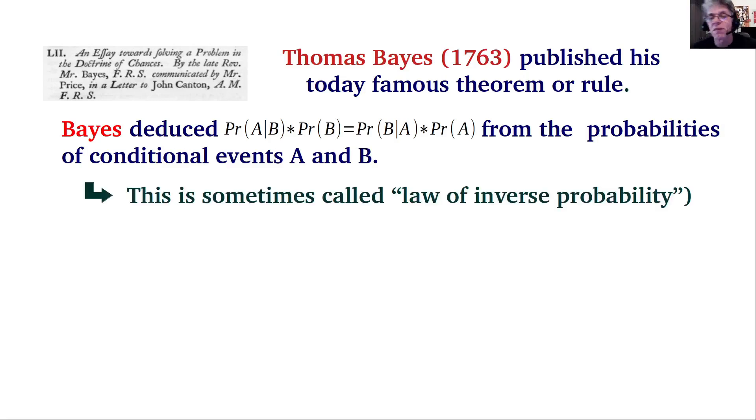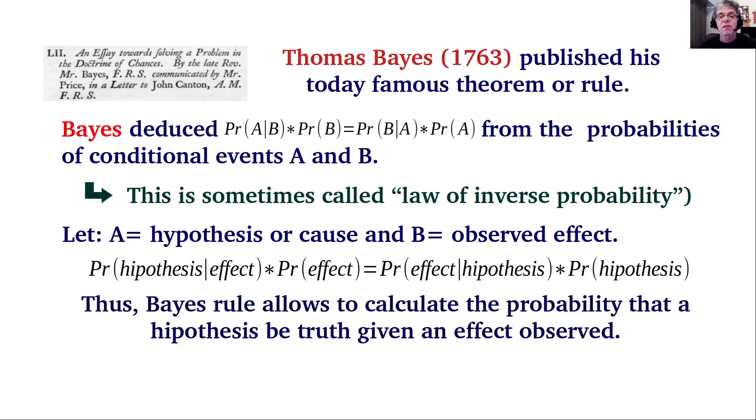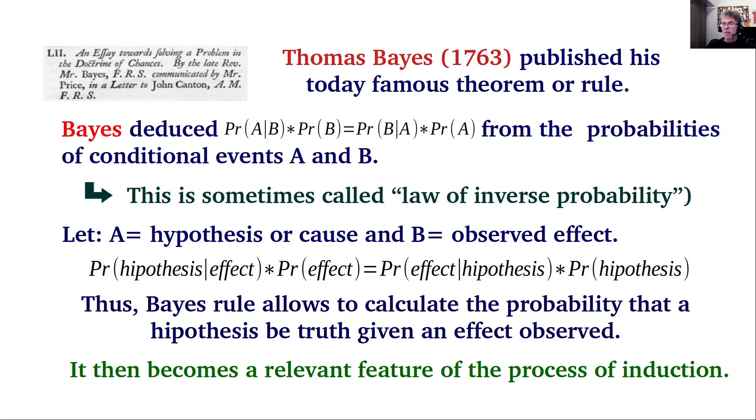Bayes' rule is also known as the law of inverse probability, and this is related to the problem of induction. Let A be a hypothesis or cause and B be the observed effect. By replacing A into Bayes' rule, now we have the probability of a hypothesis being true given that we have observed the effect times the probability of the effect equals the probability of the effect given the hypothesis times the probability of the hypothesis being true. Bayes' rule allows us to calculate the probability that a hypothesis is true given that we have observed a given effect, so it becomes an important feature in the process of induction.